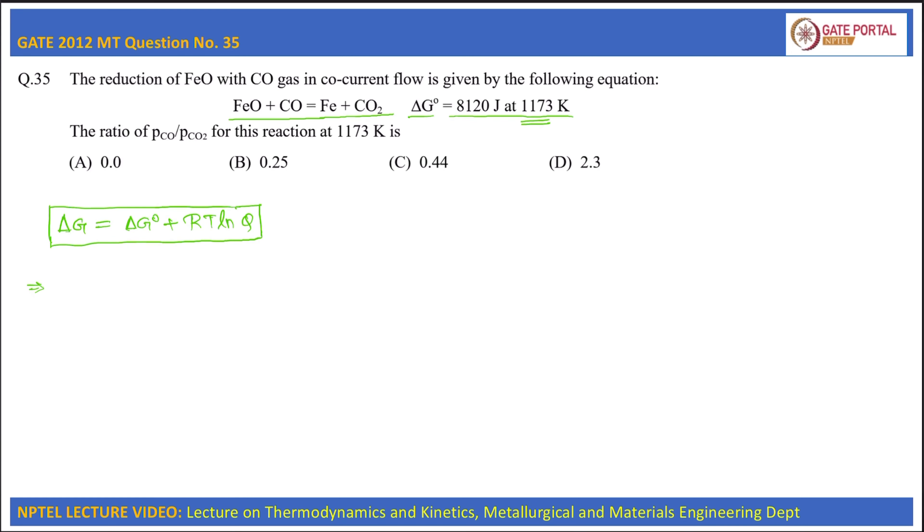ΔG° is given plus RTln, so this Q will be K equilibrium. So now we can write K equilibrium as exponential of minus ΔG° by RT.